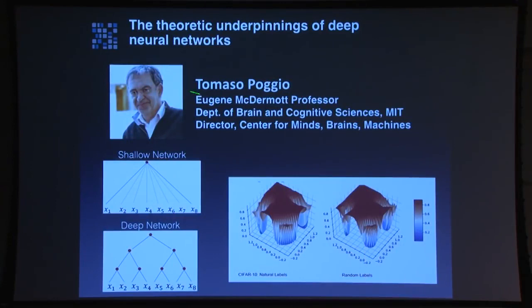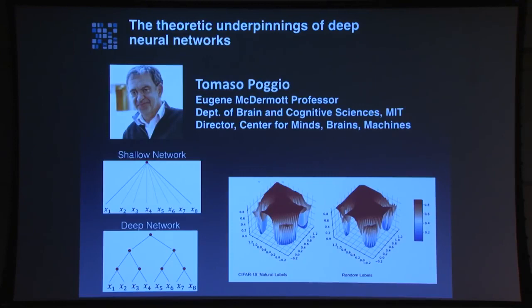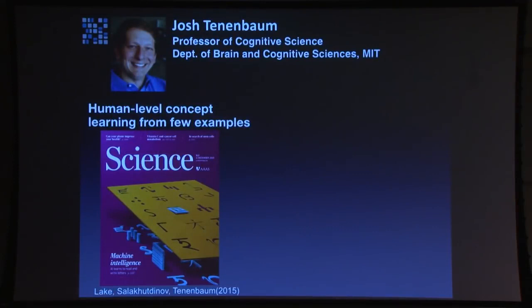My colleague Tommy Poggio is a theorist and model builder who has been the foundation of much of this work. Tommy points out that even though we have these deep neural network models, we still don't deeply understand them at a theoretical level. His group has done a lot of work to understand how these models perform so well, why deep networks perform better than shallow networks, and why they're able to generalize so well despite having many parameters — surprising given previous ideas from statistics about how you need to train models.